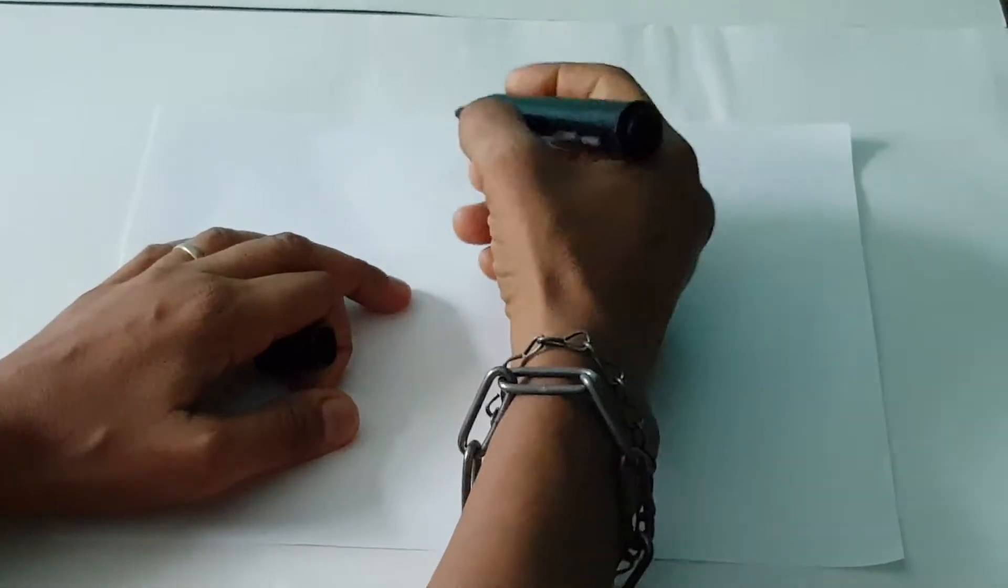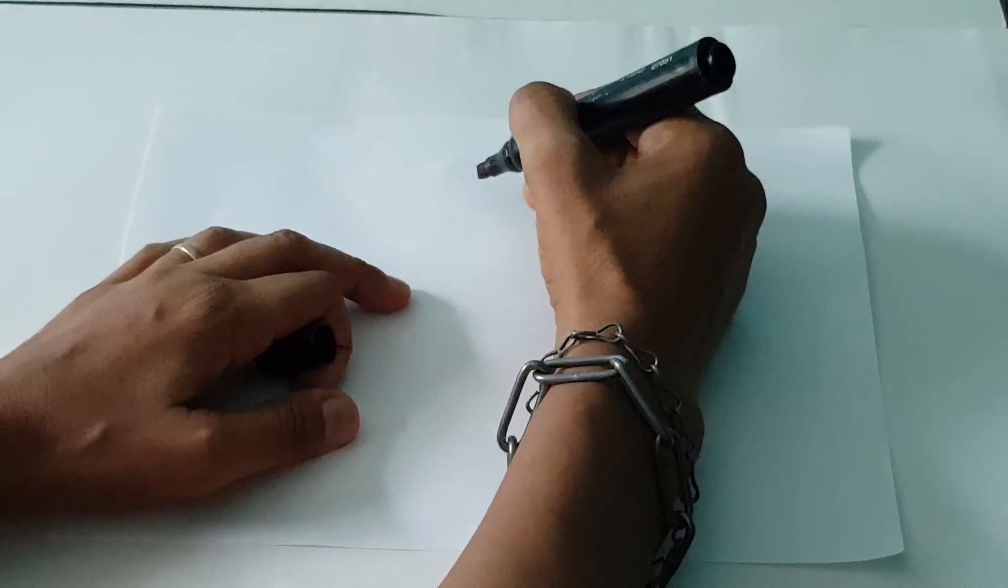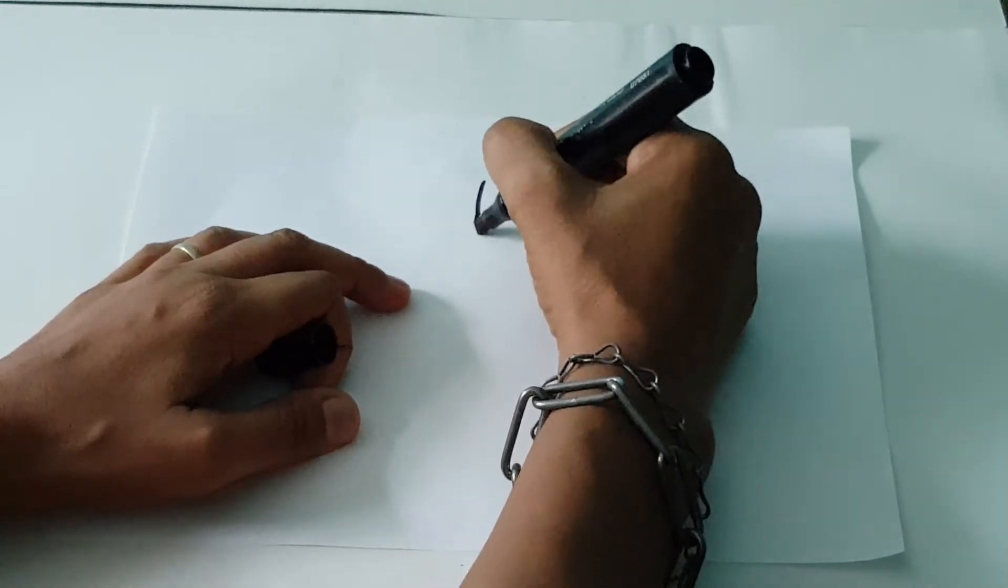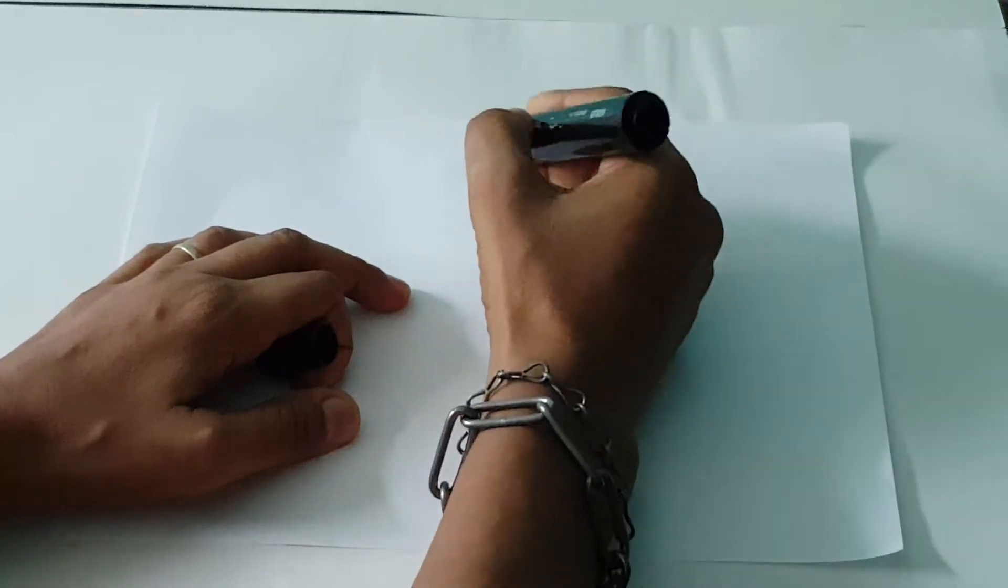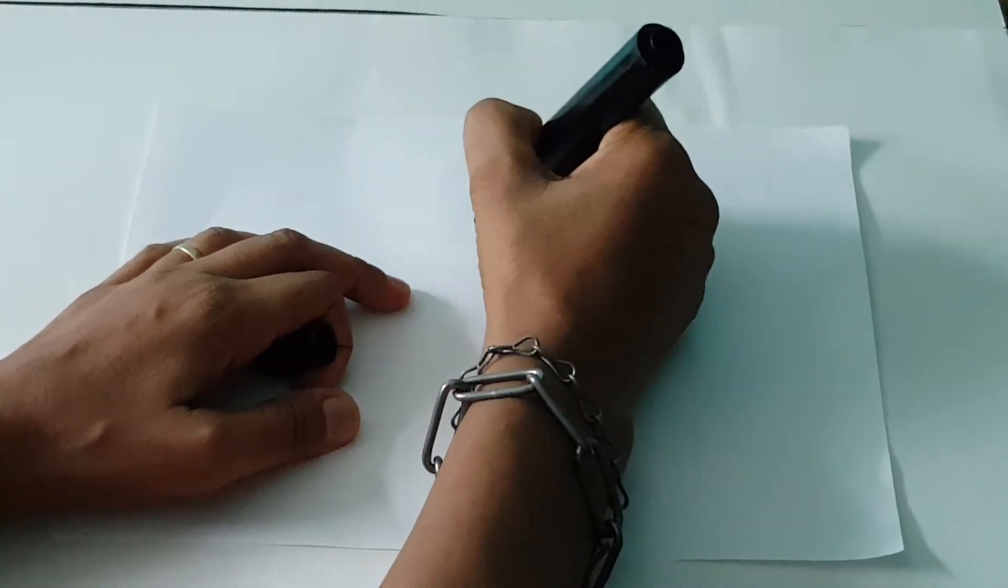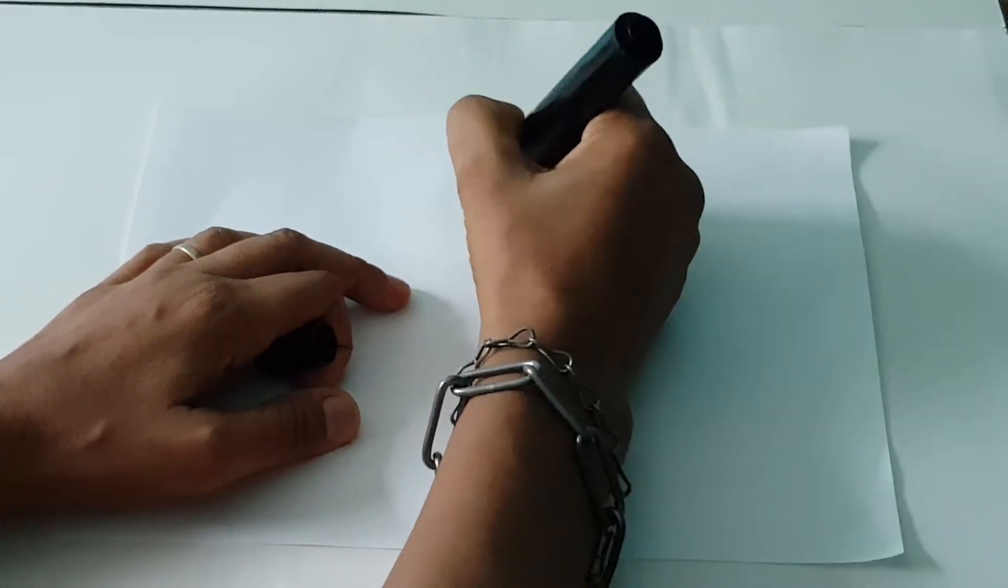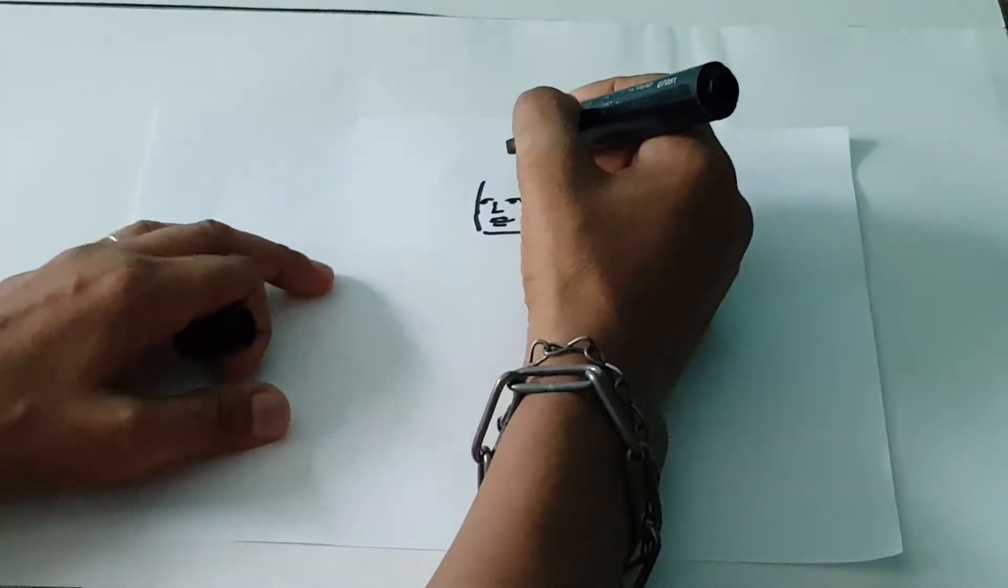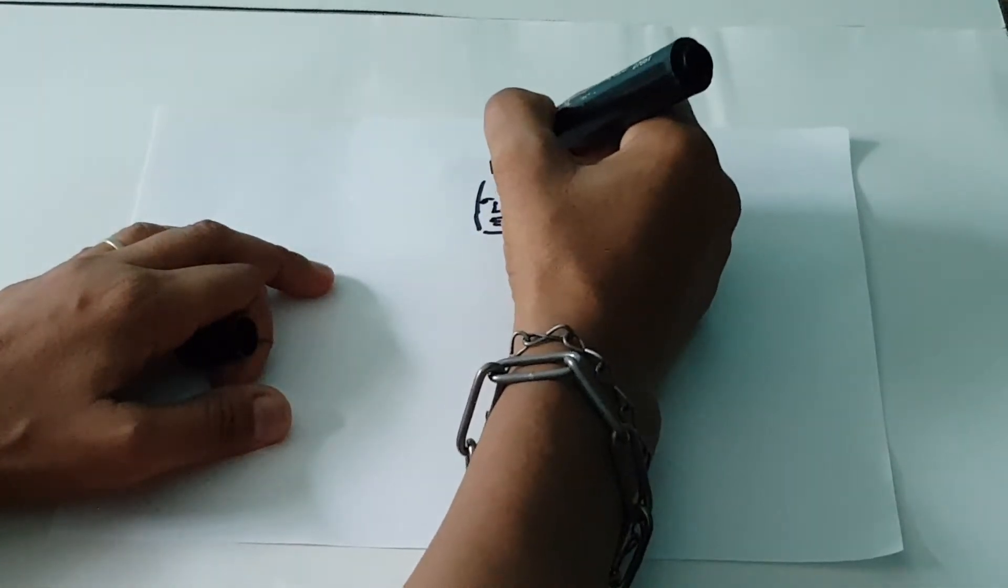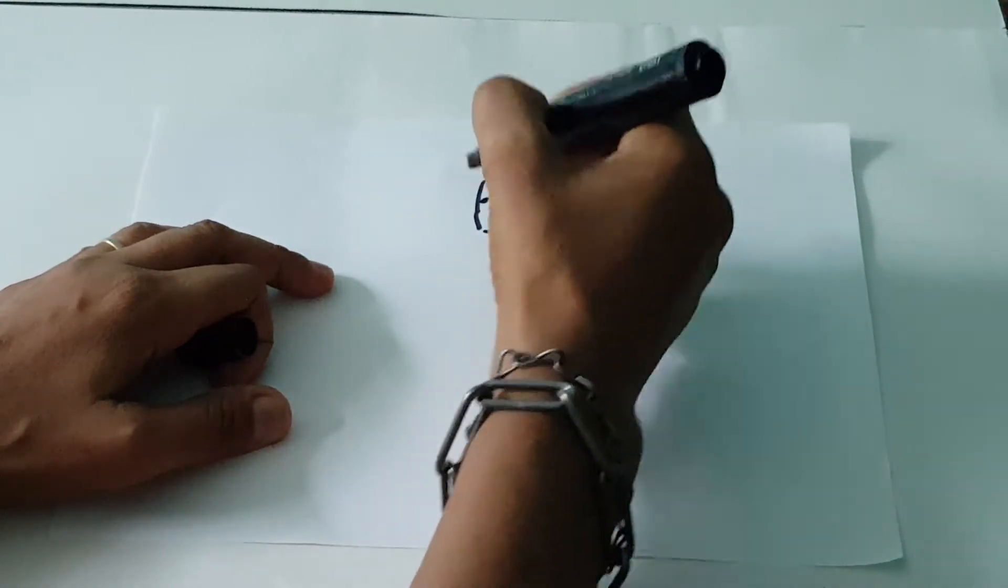To begin we're going to draw the head. We don't want to draw the head too big and too low so that we're going to do a full drawing of his body. So we have this, that's his mouth, his nose, and his eyes. And we have his ears in line with his nose.